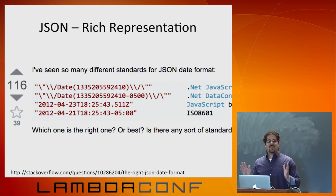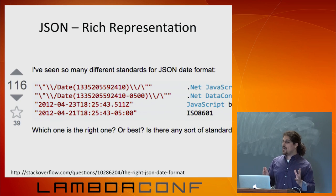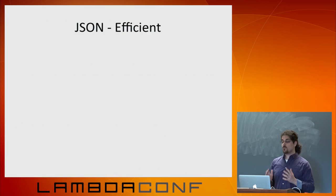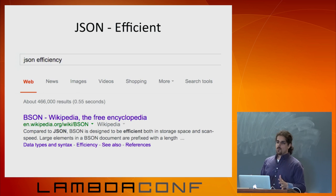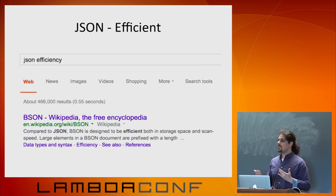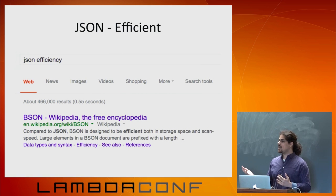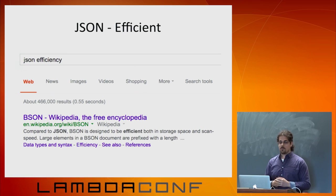Maybe it's not rich in the absolute sense, but at least it's really efficient — surely we wouldn't be using this as a transport protocol for the web otherwise. Well, apparently Google suggests that if you search for JSON efficiency, they actually recommend you use BSON instead. That's not a really strong endorsement of JSON's performance.